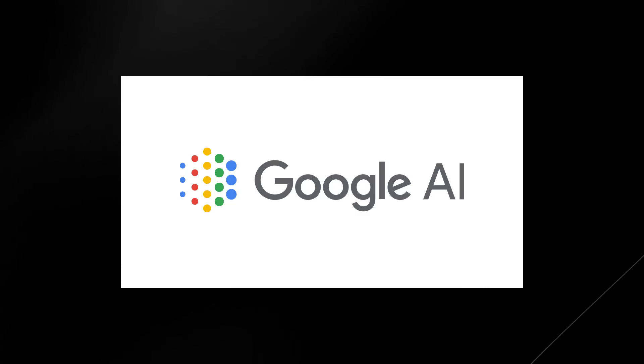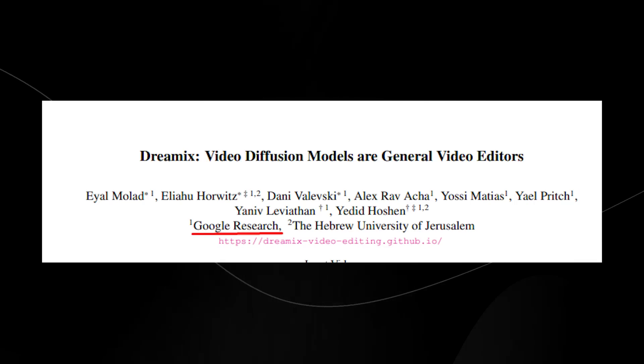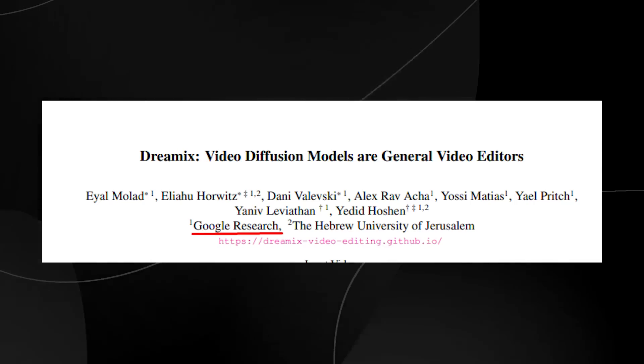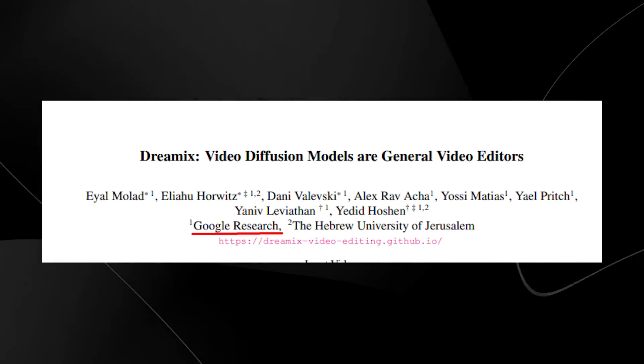Google is once again showing why they're one step ahead of all major competition when it comes to certain AI features. Recently, Google's AI team released this research paper documenting their text-to-video approach, and honestly, the results are completely mind-blowing.